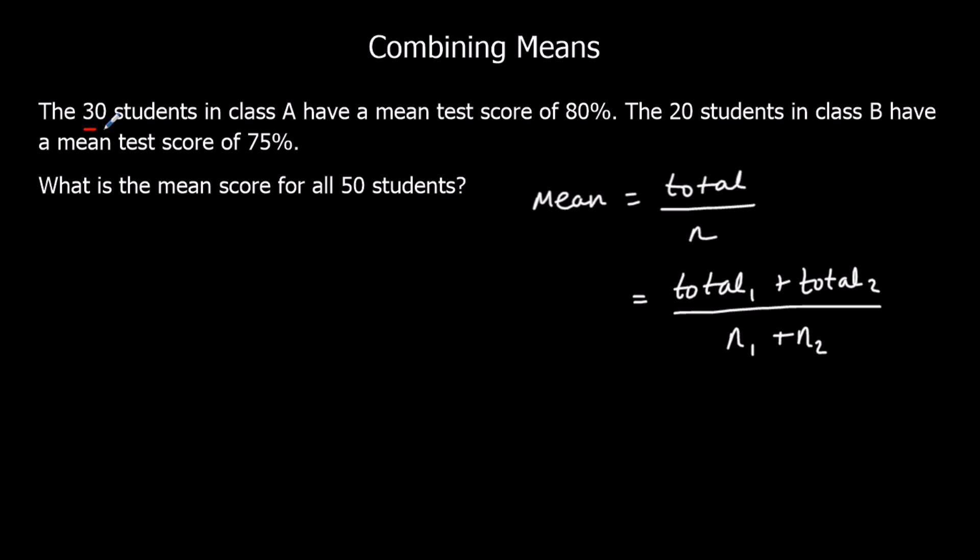Here we've got 30 students in class A with a mean of 80% and 20 students in class B with a mean of 75%. What is the mean for all of the students together? So we're given the number in each of them and we're given the mean of each of them. We don't know the total.